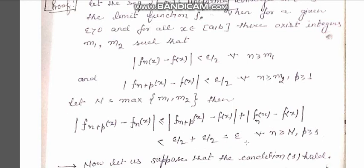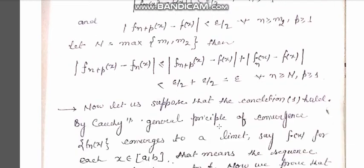The sum is equal to epsilon, so our first condition is satisfied. Now let us suppose that condition one holds, and we have to prove that the sequence of functions is uniformly convergent.